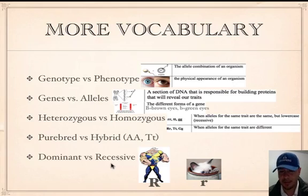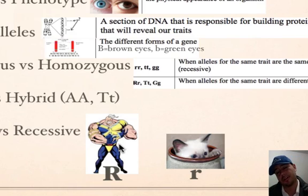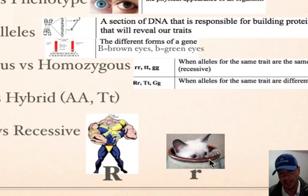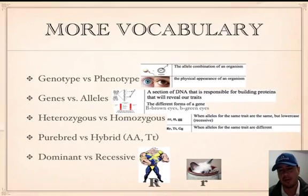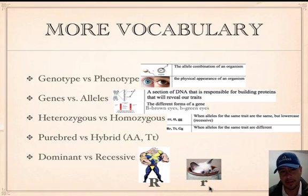Dominant or recessive — when you have a dominant allele, it's very powerful. It overshadows the recessive allele. Little r means it's recessive, or hidden — just like a kitten hiding in a cup. Dominant means overpowering, hiding the other allele. Recessive means it is being hidden. Dominant is always written with a capital letter; recessive is always written with a lowercase letter.